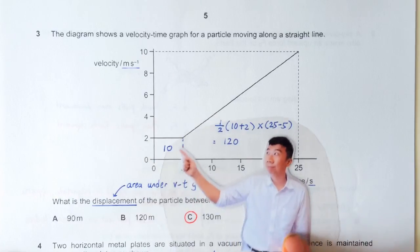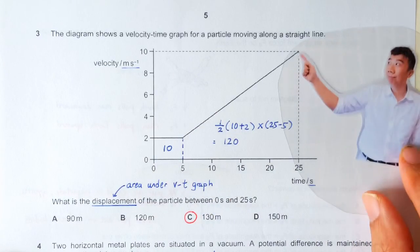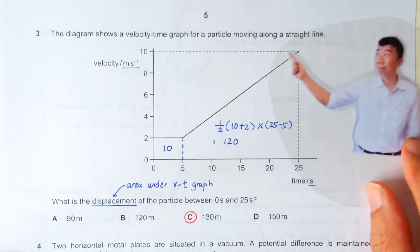So the area of this rectangle is, of course, 2 times 5, 10. The area of this trapezium is, of course, the average of the two parallel sides.